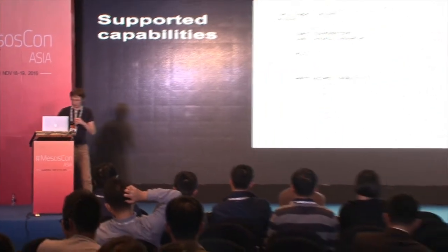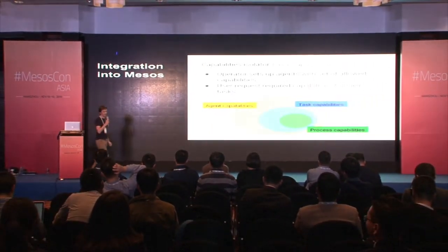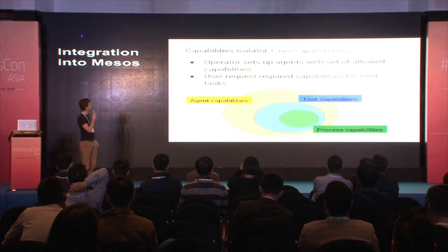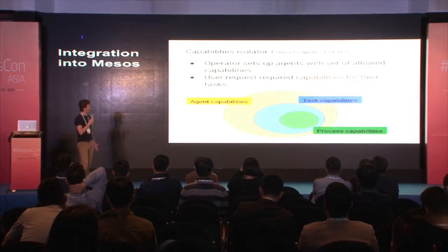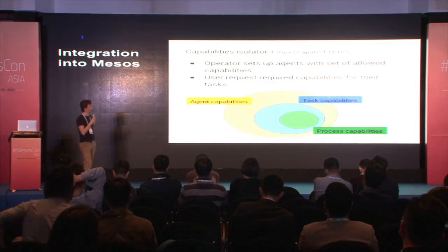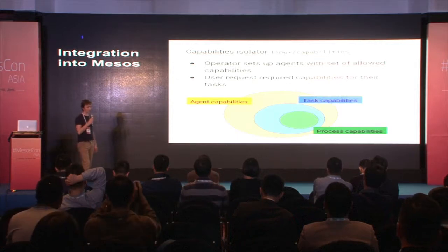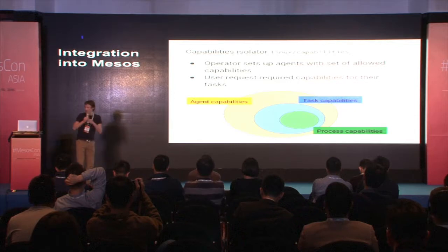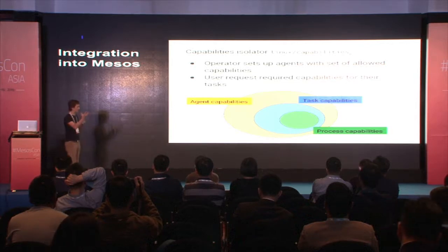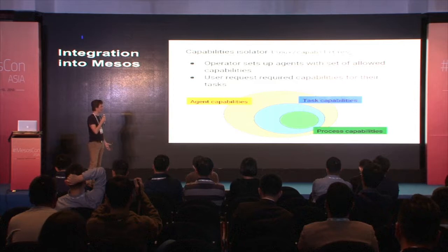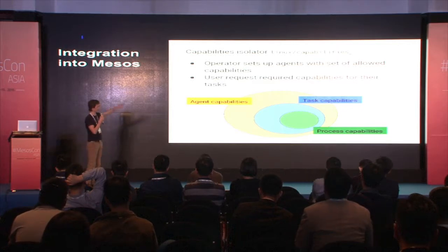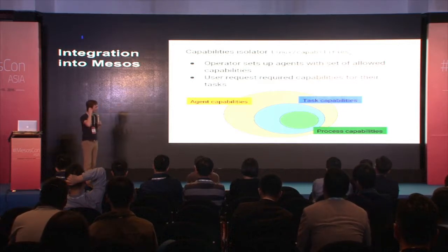We added a protobuf message to Mesos and also a Linux capabilities isolator. The idea is that the operator sets up some agent with a set of allowed capabilities the operator is comfortable giving to users, and the user requests some capabilities required for their tasks in a message. The agent capabilities are always the limiting set for what capabilities a task can request, and then the processes running inside that task are further restricted by the task, giving us that nice containerization and defined service area.